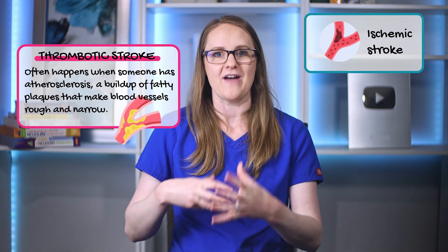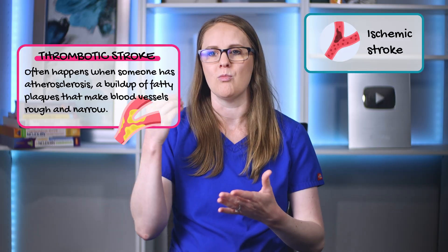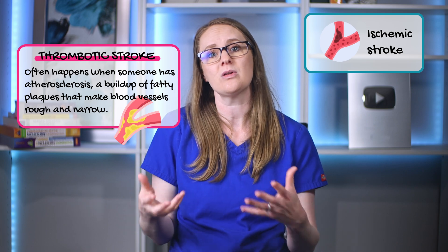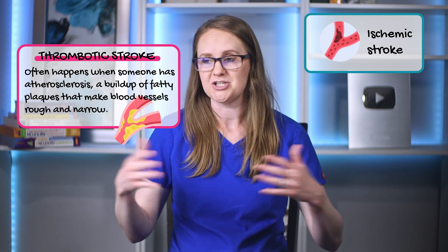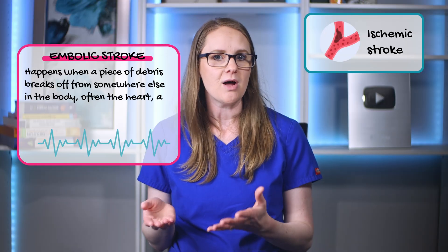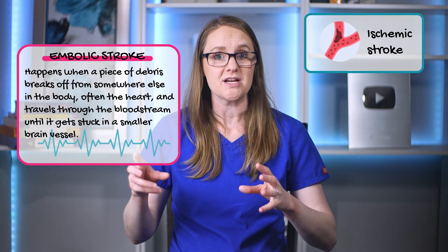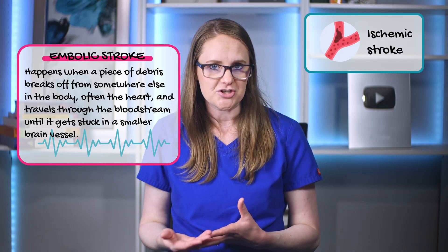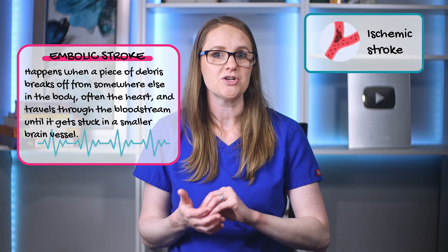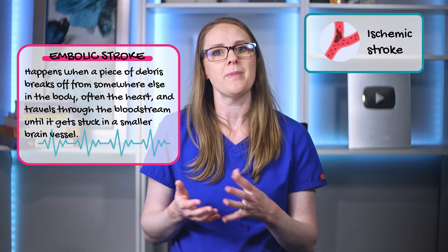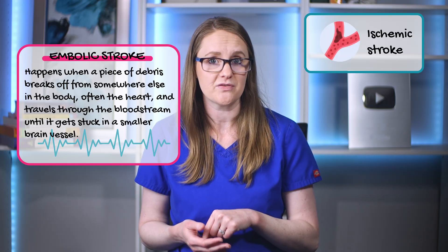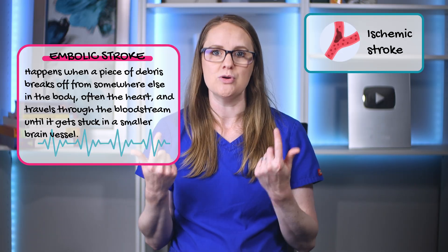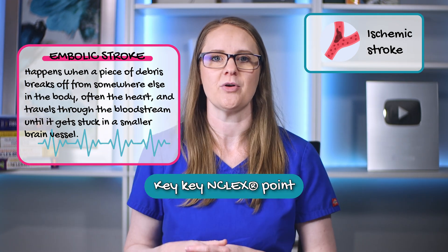With a thrombotic stroke, the clot forms right there in the brain's blood vessel, often due to atherosclerosis — a buildup of fatty plaques that make vessels rough and narrow, like a pothole that worsens until it blocks the road completely. With an embolic stroke, a piece of debris breaks off from somewhere else in the body — often the heart — and travels through the bloodstream until it lodges in a smaller brain vessel. Patients with atrial fibrillation are at higher risk because that irregular heart rhythm can cause clots to form in the heart and travel to the brain — that's a key NCLEX point.